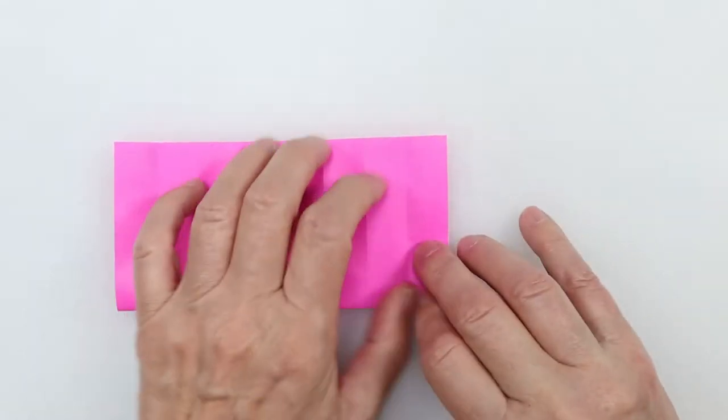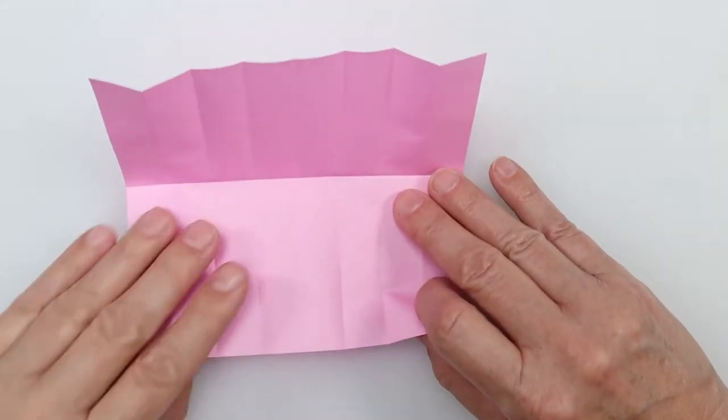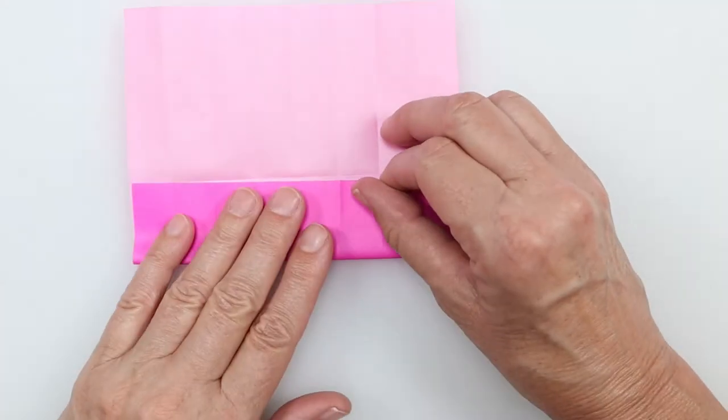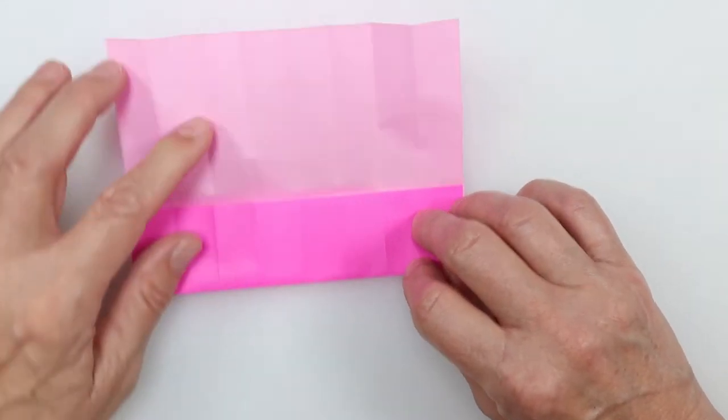So it's like this. I'm going to unfold it and fold this bottom edge to the center crease, and I'm going to leave it folded like that.